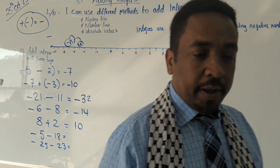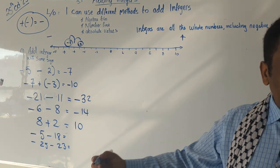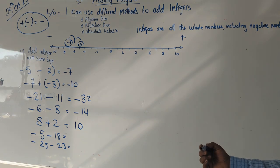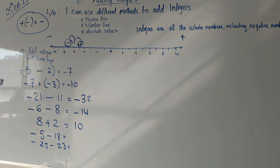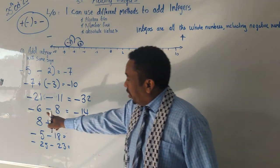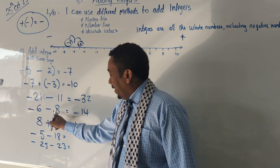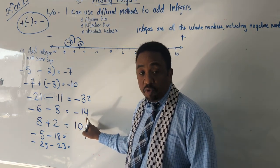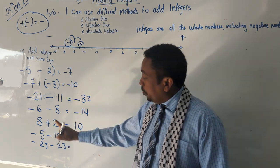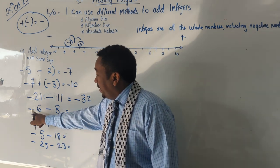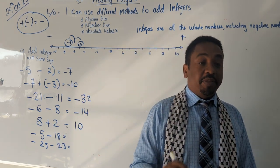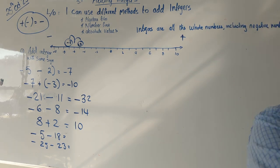A student asks: if it's negative plus negative, you add the two numbers but the answer will carry the negative — that's the rule. So here we add 6 and 8 to get 14, and because both are negative the answer is negative 14.